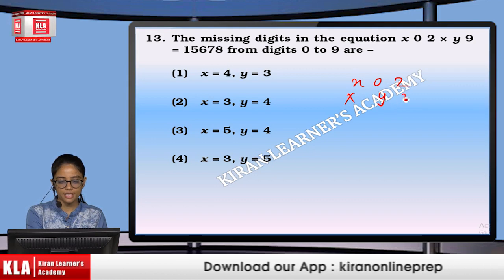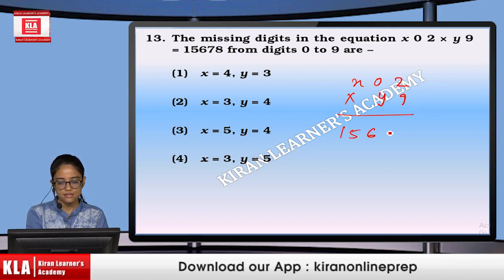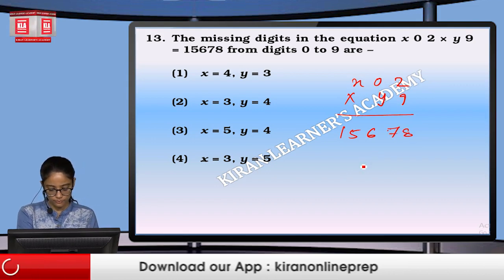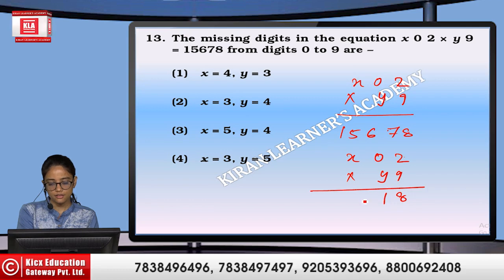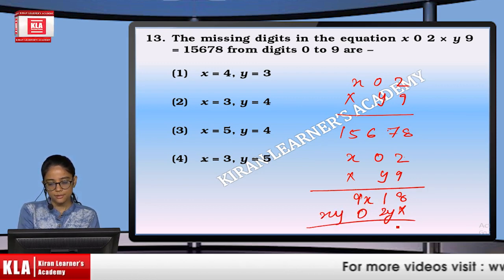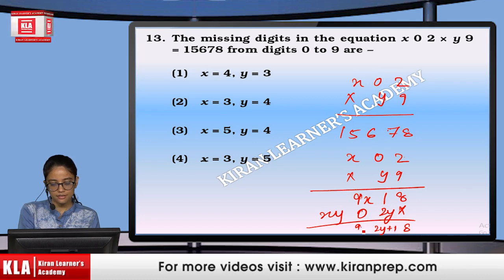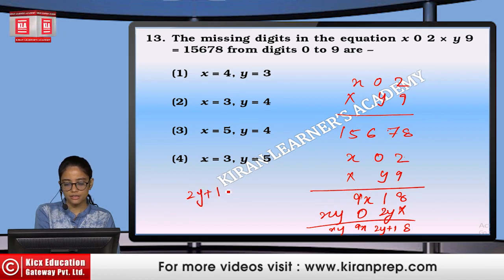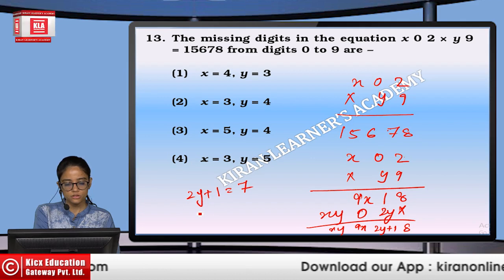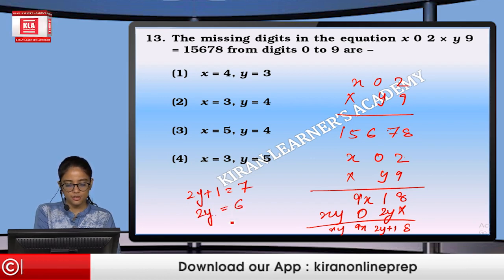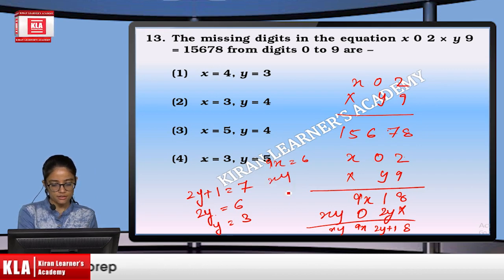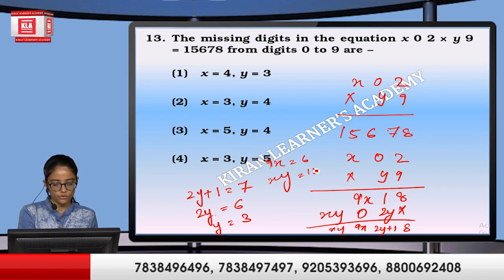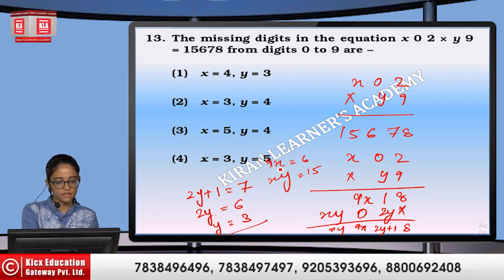X02 multiplied by 9 should equal 1,5,6,7,8. Working through the multiplication: 18 gives 9X; solving 2Y equals 6 gives Y equals 3. Similarly, 9X should equal 6, and XY equals 15. Therefore Y equals 3. That is option number 1.